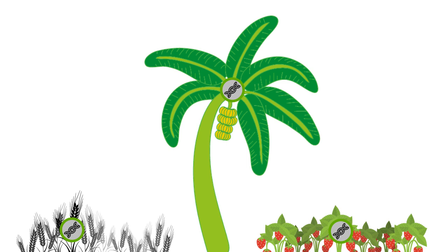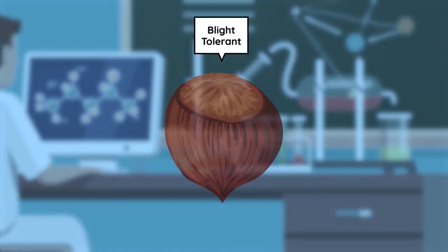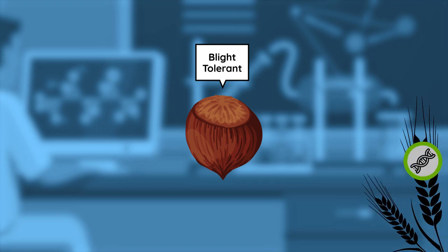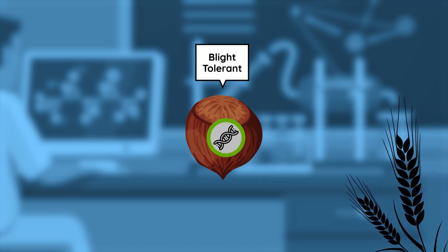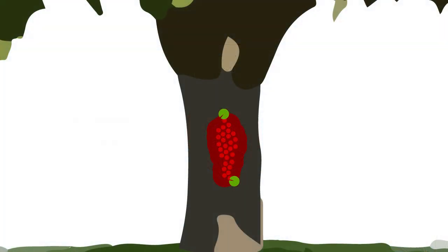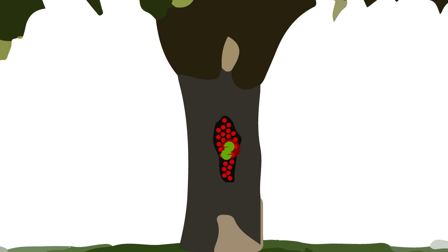We have been able to make blight-tolerant American chestnut trees by transferring an oxalate oxidase gene from wheat into the chestnut's genome. This enzyme protects the tree from the acid by transforming it into harmless compounds. By removing the weapon of the fungus, the tree and the fungus can now coexist.